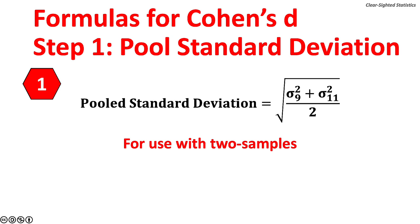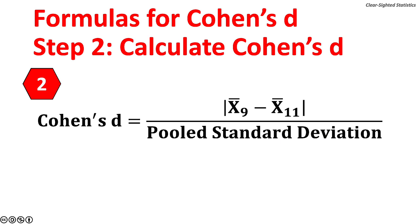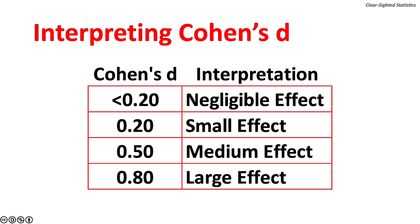Calculating Cohen's D is a two-step process. First, pool the standard deviations — the square root of the sum of the two standard deviations, assuming equal sample sizes. If sample sizes are unequal, a weighted mean of the variances is used. Second, take the absolute value of the first mean minus the second mean, divided by the pooled standard deviation. This table shows Cohen's D thresholds and their interpretation; most effect sizes are small.